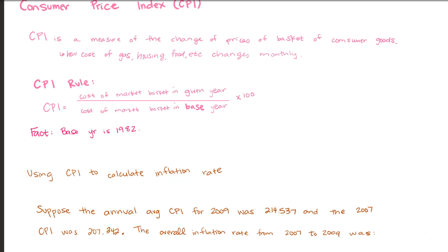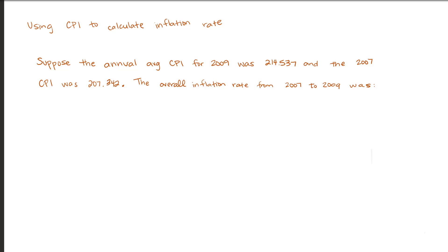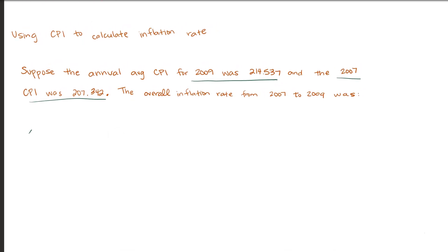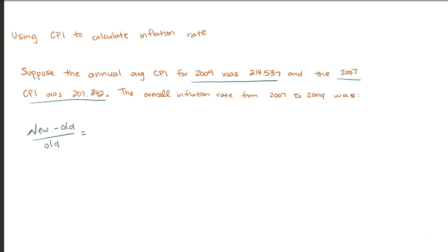Now the cool thing about this is the CPI is a rate that looks at the change of prices. Again, that's inflation. So we can use the CPI to calculate inflation. Let's do an example together. We have the CPI for 2009 and we have the CPI for 2007. So we can look again using new minus old over old, we can find what the inflation rate was from 2007 through 2009 by looking at the CPI, at the change in CPI. And once we do our math from the Mathematizing module, we come to the conclusion that the overall inflation rate from 2007 to 2009 was 3.47 percent.